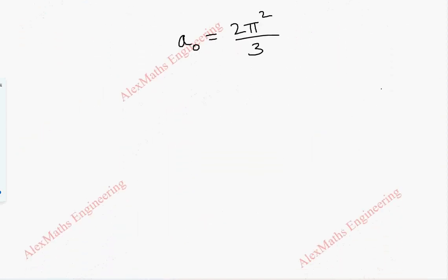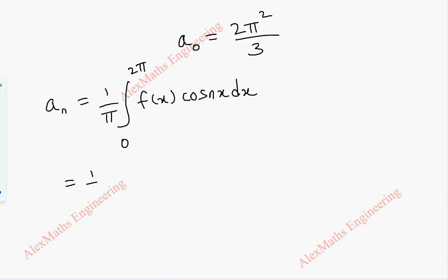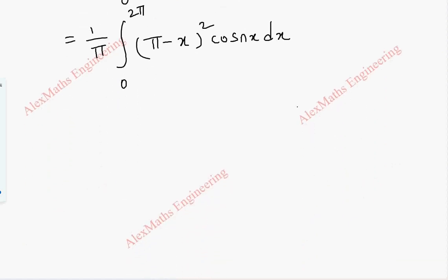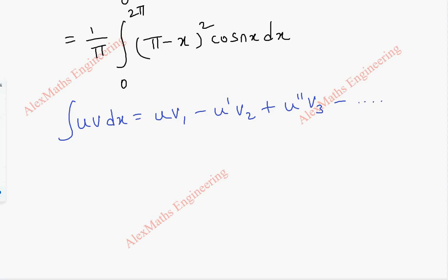Coming to aₙ, the formula is (1/π) integral from 0 to 2π of f(x) cos(nx) dx. So this is (1/π) integral from 0 to 2π of (π − x)² cos(nx) dx. We are going to use Bernoulli's formula: ∫u·v dx = u·v₁ − u'·v₂ + u''·v₃ − ···, where here u = (π − x)² and v = cos(nx).